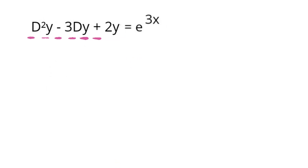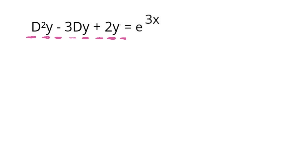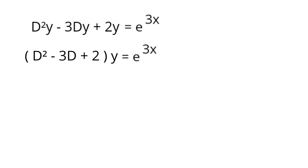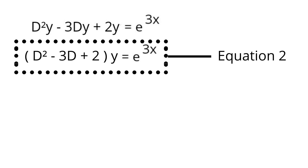Now, I will take y as common from the three terms on the left hand side — that is from D²y minus 3Dy plus 2y. We get the bracket D² minus 3D plus 2 multiplied by y is equal to e raised to the power 3x. Let us call this equation number 2.